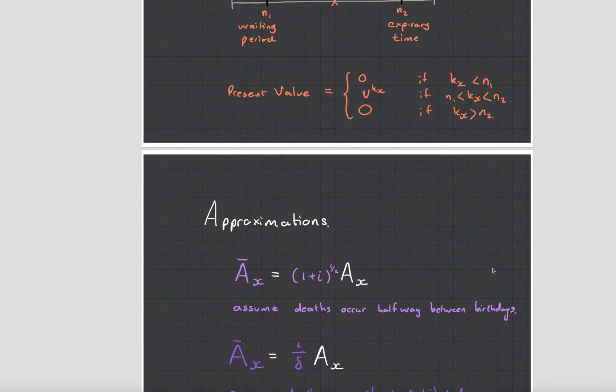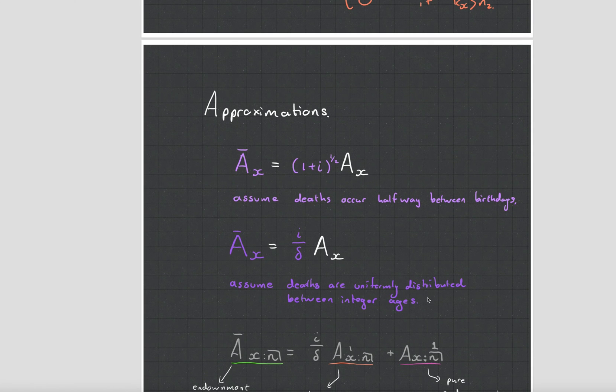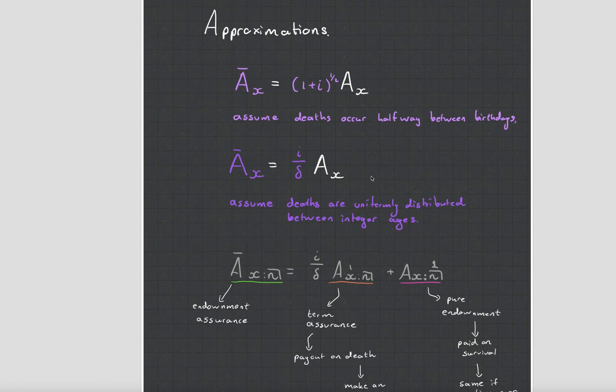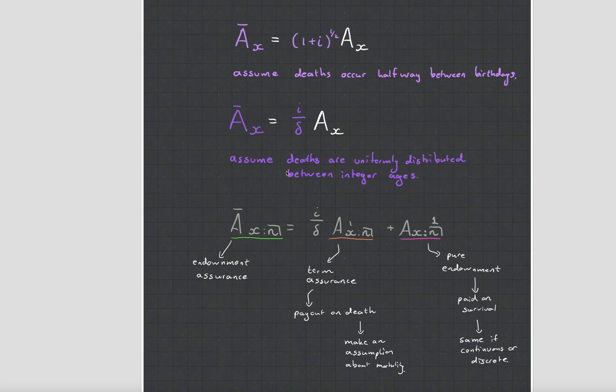Okay just to get more about this whole payable immediately on death or payable at the end of the year you can make a little approximation there's two types the one is when you assume that deaths occur halfway between birthdays you just add on half a percent or half of the discount factor. The other thing is if you assume deaths are uniformly distributed between integer ages you will bring in delta and you'll change it like that. This one we'll see is much more easier to use mathematically when we have to calculate the variance but we'll get to that right at the end.